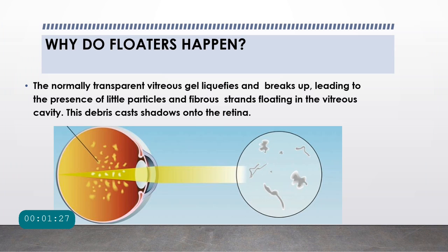So why do we actually see floaters? Normally the vitreous gel, which is present between the lens and the retina, is a transparent homogeneous gel. With age and sometimes with various pathological conditions and diseases, the vitreous gel undergoes liquefaction. As that thick vitreous gel, which is made up of hyaluronic acid, breaks up, it leads to the presence of little particles and fibrous strands forming within the vitreous substance. Such floating strands then cast a shadow onto the retina, and that shadow is seen as floaters in the field of vision.